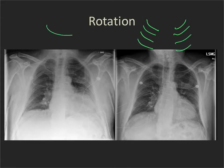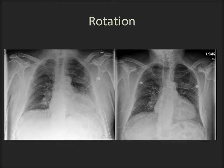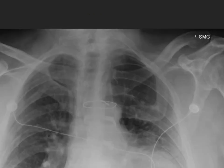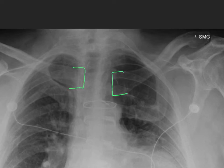A kid who's rotated is going to have one side looking long and the other side being foreshortened. So let's look at this image pair. This is a rotated image and this one is not rotated. I'm going to zoom up a little bit so we can look at the medial ends of the clavicles. Here is the medial end of the right clavicle, here is the medial end of the left clavicle, and here is the spinous process — clearly not central.